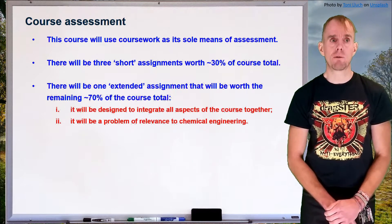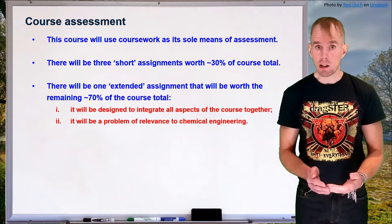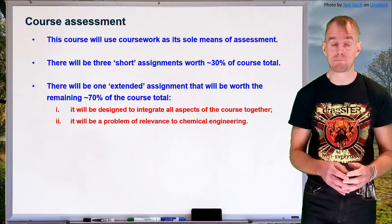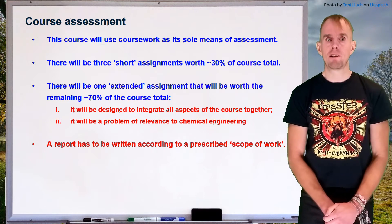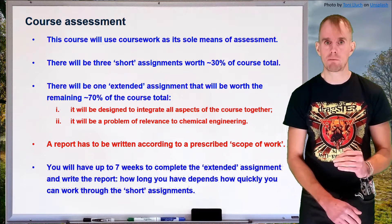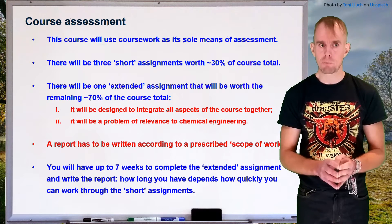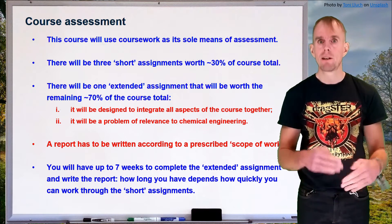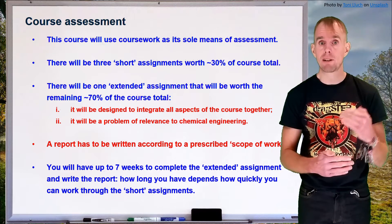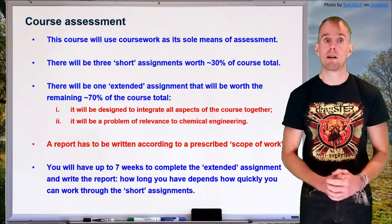The second part of the assessment is an extended assignment worth 70% of the remaining course total. This is a mini project designed to integrate all aspects of the CFD course together, and it's also designed to be an interesting problem relevant to chemical engineering. The deliverable is a report, with a scope of work giving exact details of what should be included. You'll have up to seven weeks to complete this extended assignment. The short assignments are self-study, given out altogether with deadlines spaced over three weeks, but you can submit before those deadlines to create more time for the extended assignment.